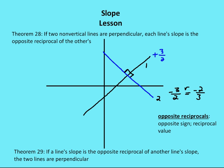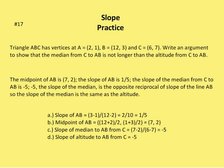We're going right into some practice problems. Problem 17: we have triangle ABC with vertices A, B, and C. We need to write an argument to show that the median from C to AB is not longer than the altitude from C to AB. First, we find the midpoint of AB. The x value is 2 plus 12 over 2, which is 7. The y value is 1 plus 3 over 2, which is 2. So the coordinate of the midpoint is (7, 2).